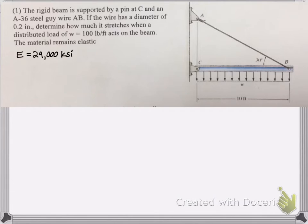So we've got steel and the diameter of the beam there is 0.2 inches. And we're trying to see how much the cable there stretches if it's under a 100 pound per foot load across the beam. And again, sorry I messed up, 0.2 inches for the diameter of the wire, the cable.